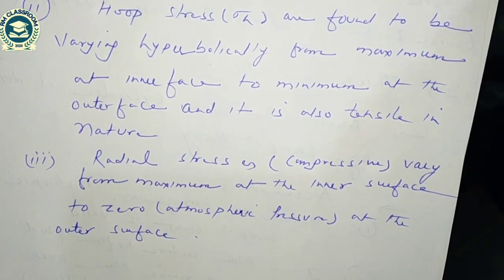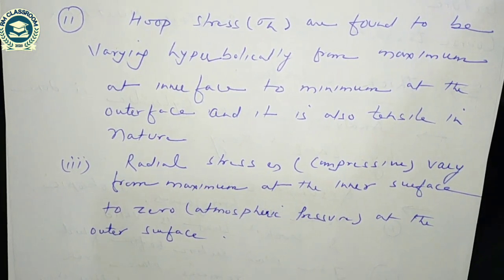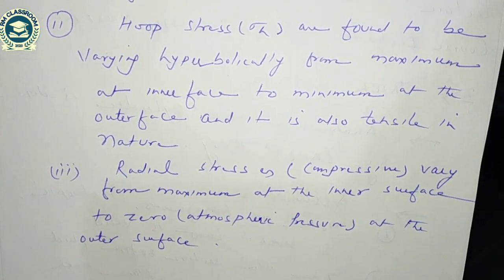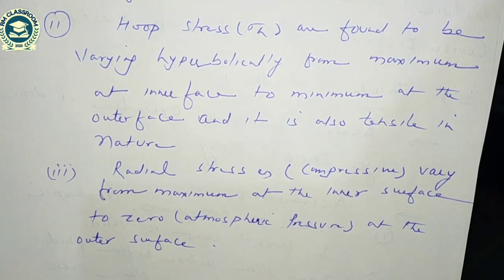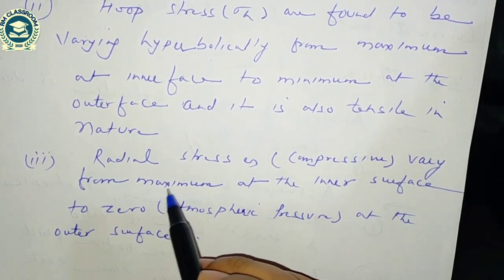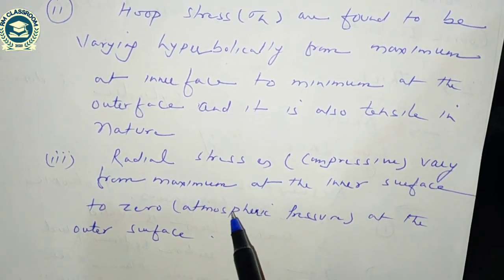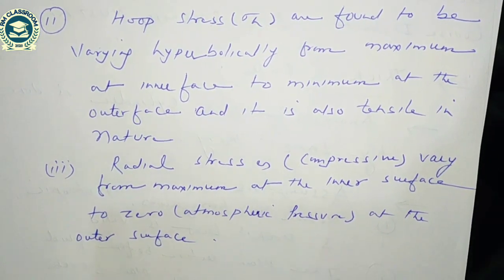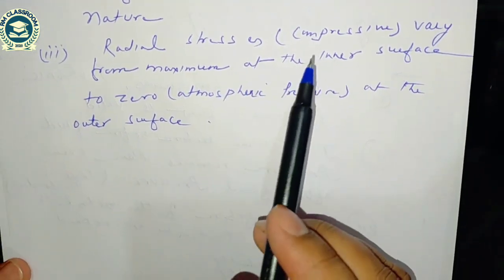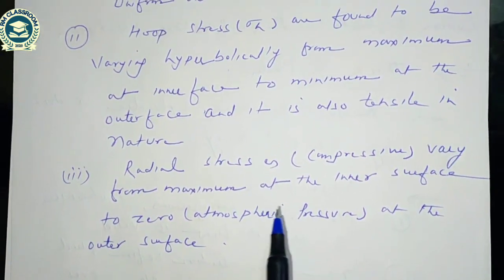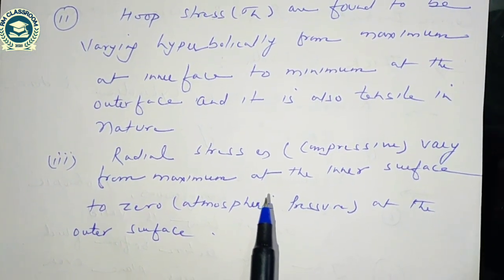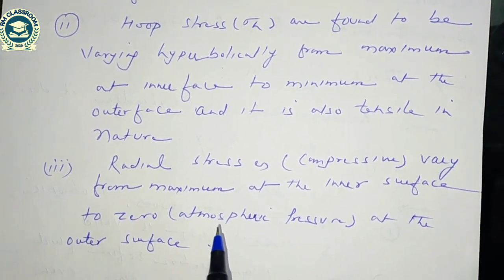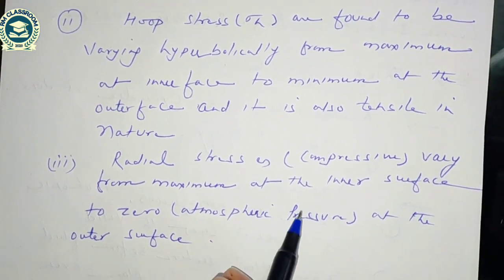To summarize Lame's three statements: longitudinal stress is tensile and uniform across thickness; hoop stress is tensile and varies hyperbolically from maximum at the inner face to minimum at the outer face; radial stress is compressive, varying from maximum at the inner surface to zero at the outer surface. In thin cylinders, radial stress was assumed zero because it was negligible, but in thick cylinder analysis, radial stress is also taken into account.